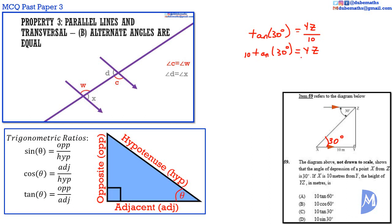10 tan 30 degrees equals YZ, or YZ equals 10 tan 30 degrees. The answer is C.